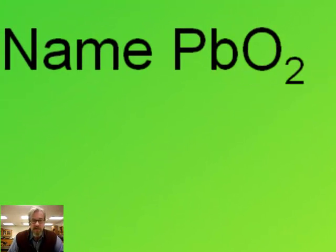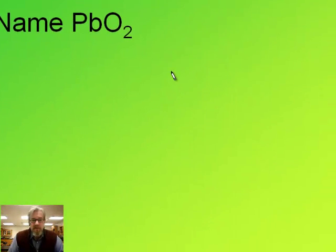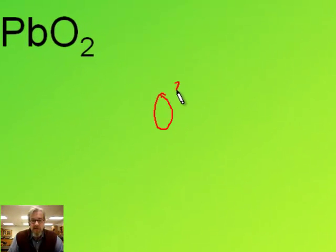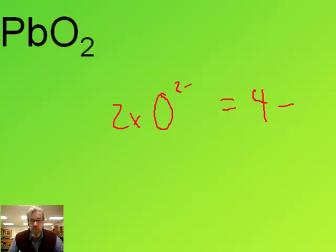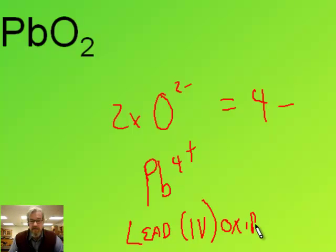PbO2 — this one's a little tricky. Oxygen is a two minus ion. There are two of them, so our total negative charge is four minus. That means the lead must be four plus. So I write: lead, Roman numeral four, then oxide.